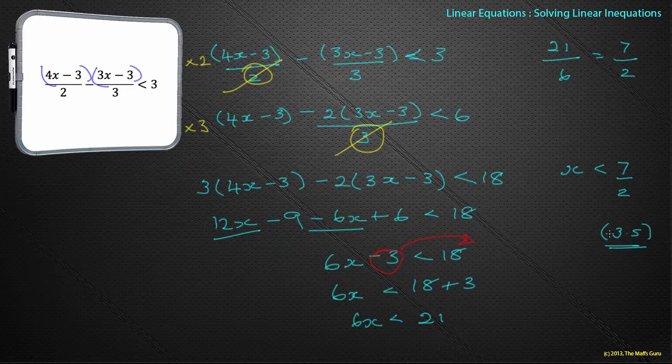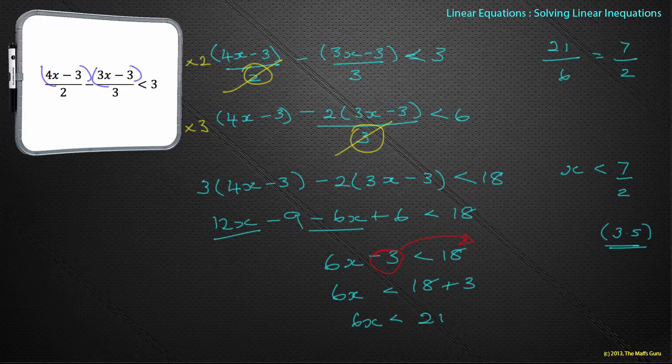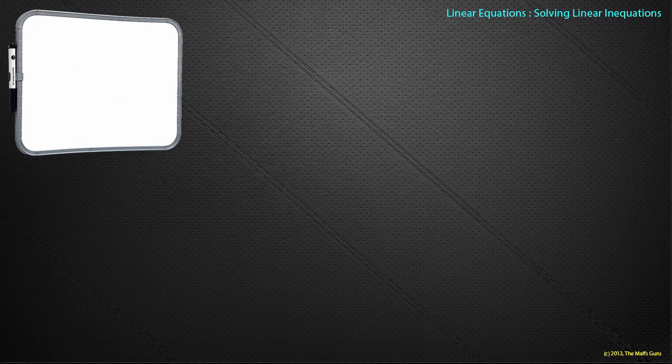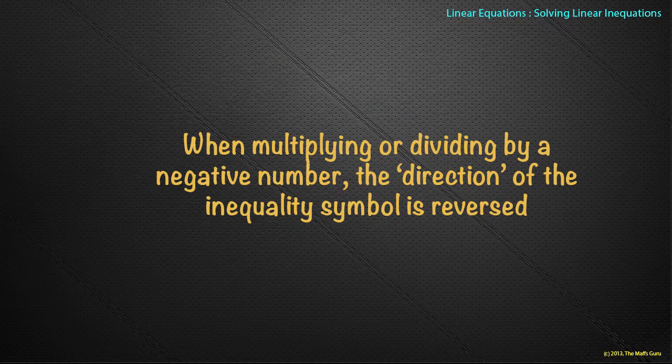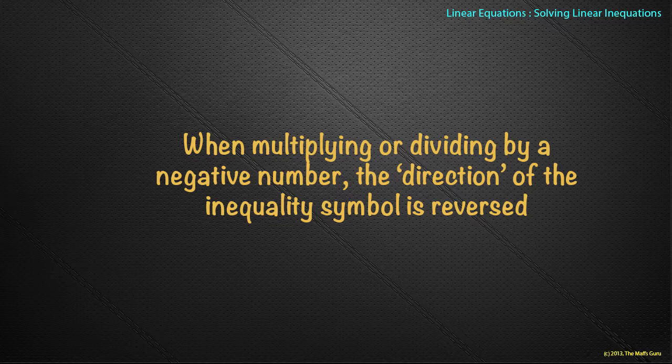Now we haven't actually got to the point where we've found anything different between this and work we've done previously with equations. But I did say there was one thing that we actually need to know. When multiplying or dividing by a negative number, the direction of the inequality symbol is reversed. That's quite important when multiplying or dividing by a negative number.